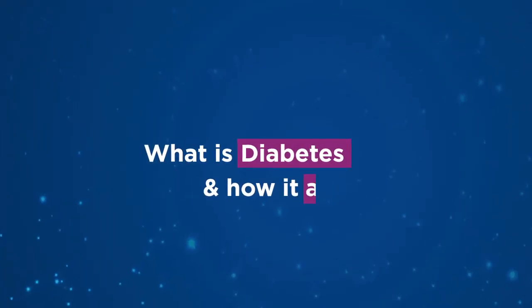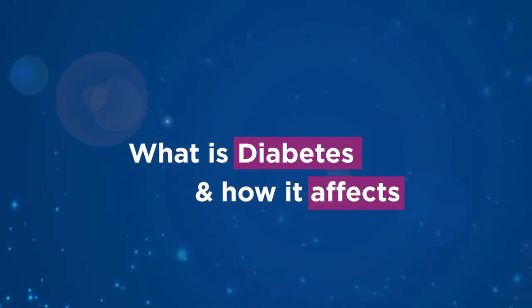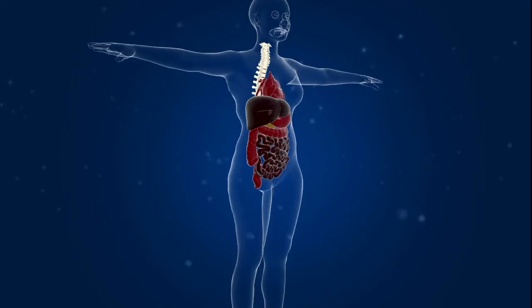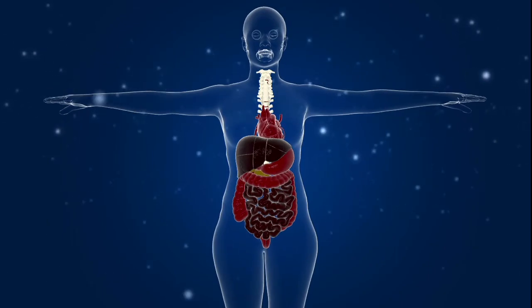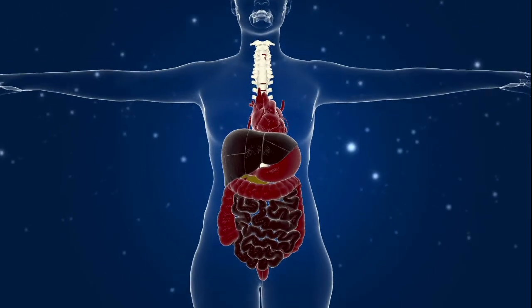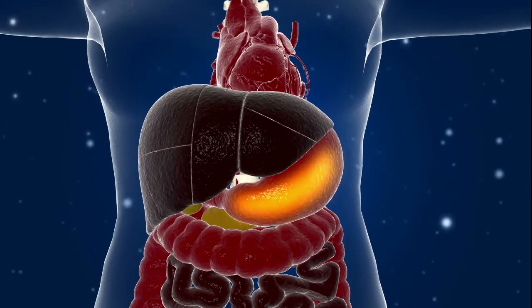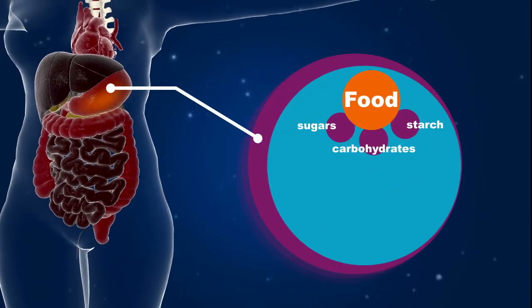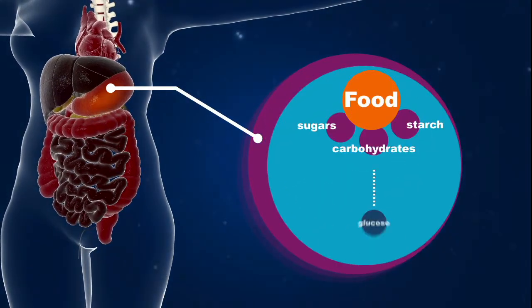What exactly is diabetes and how does it affect us? Diabetes is a disorder of metabolism. Generally, when we eat food, our digestive tract breaks down carbohydrates, sugars, and starch present in the food into glucose.